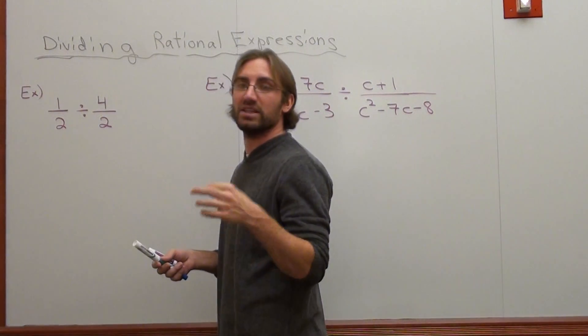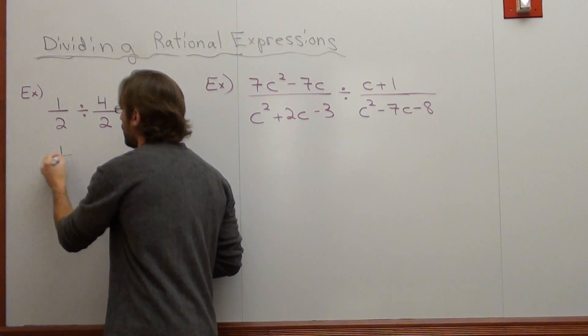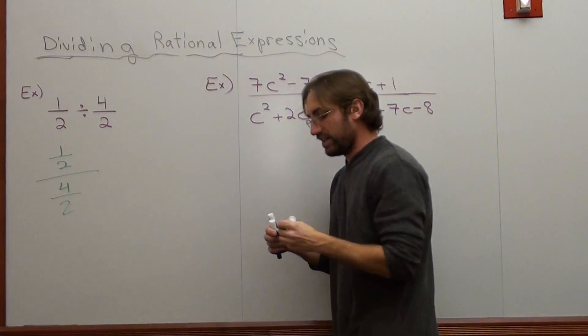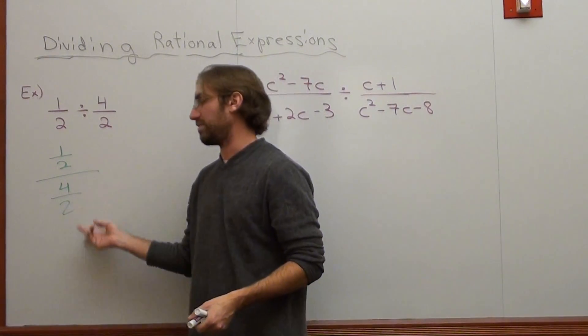Because I think it's important to understand this. One over two divided by four over two actually looks like this. And in math, it's illegal to have more than one denominator. In fact, you have three denominators here.